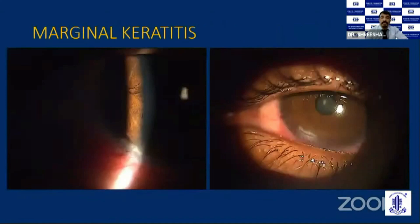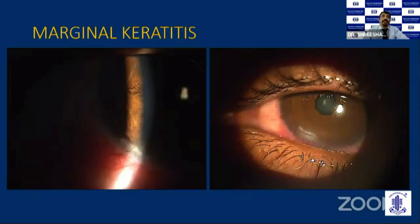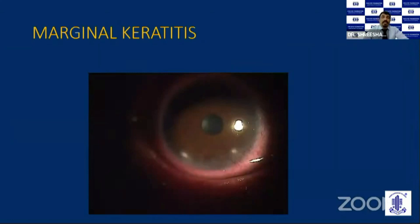Marginal keratitis due to staphylococcus is another common cause of peripheral ulcerative keratitis. It is an inflammatory disease of the peripheral cornea characterized by peripheral stromal infiltrates, often associated with epithelial breakdown and ulceration. It is usually associated with chronic blepharoconjunctivitis, conjunctivitis, or chronic Meibomian gland disease, and represents an inflammatory response against Staphylococcus aureus antigens. The typical location is at 4 or 8 o'clock, or 10 and 2 o'clock positions, where the upper and lower eyelids contact the cornea.